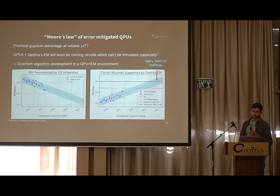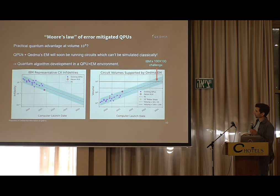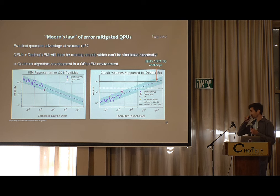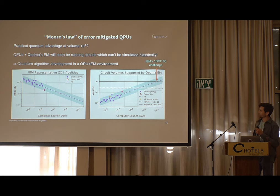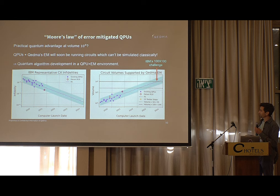Extrapolating towards the future: this is data we've extracted for IBM two-qubit gate infidelities as a function of their launch date. You can see this follows a nice exponential curve — a kind of Moore's law for IBM processors.